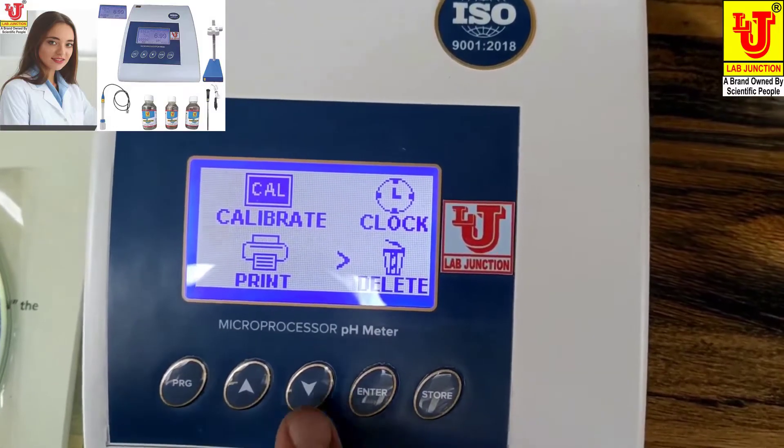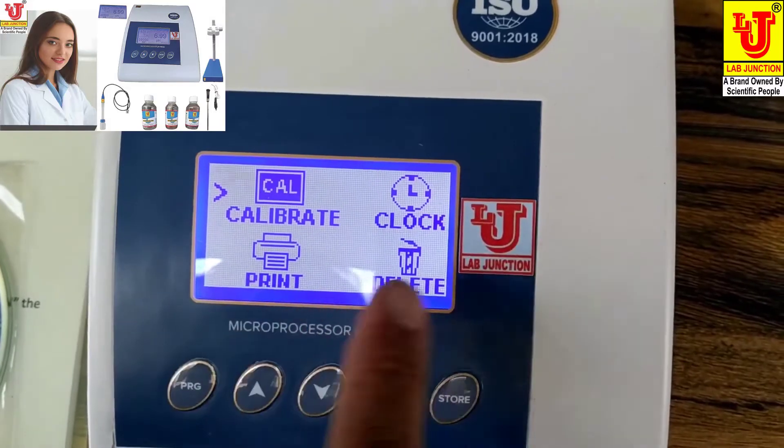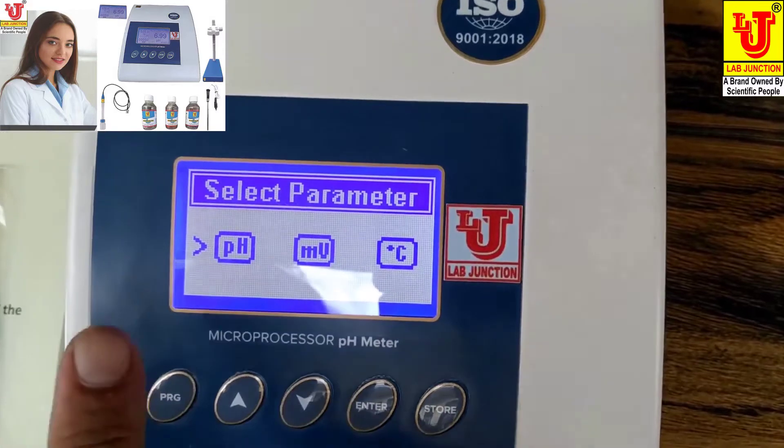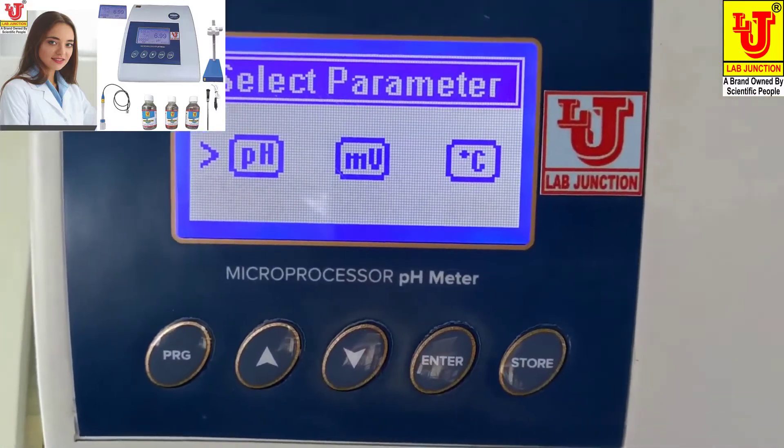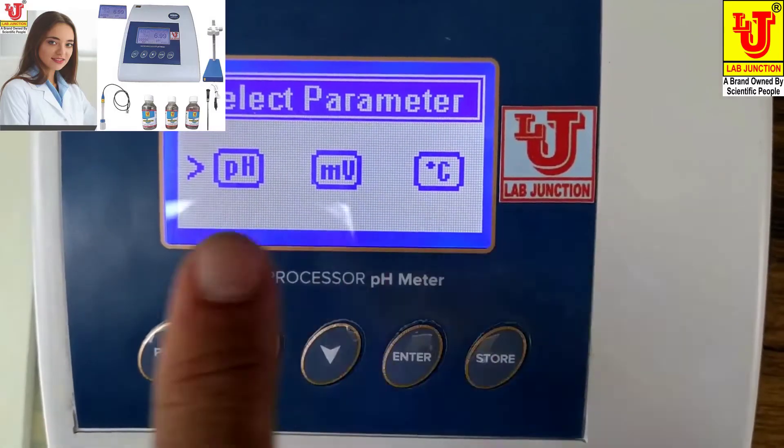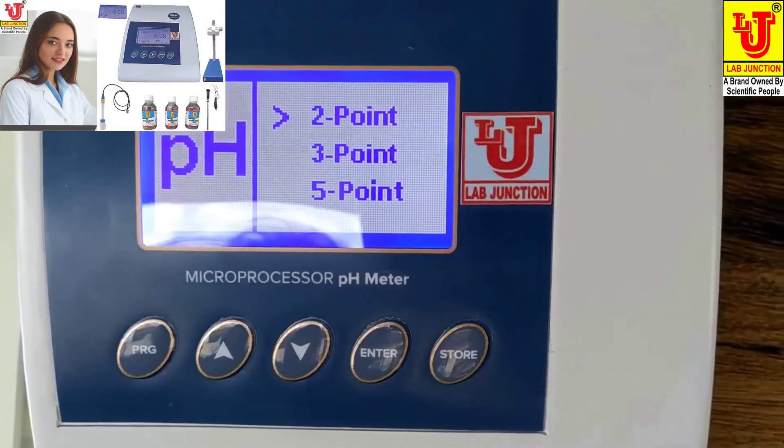Main is how to calibrate the pH meter. You go to calibrate and press enter. Three parameters: pH, millivolt, temperature, which you have to calibrate. Main is the pH. You can press enter.